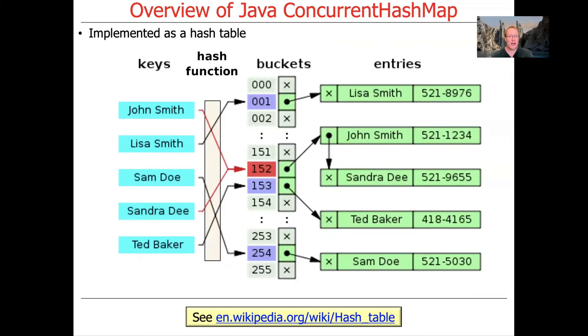Internally, a ConcurrentHashMap, like other hash maps, is implemented using a hash table. I'm assuming you're probably familiar with what a hash table is from a data structures course you've taken.